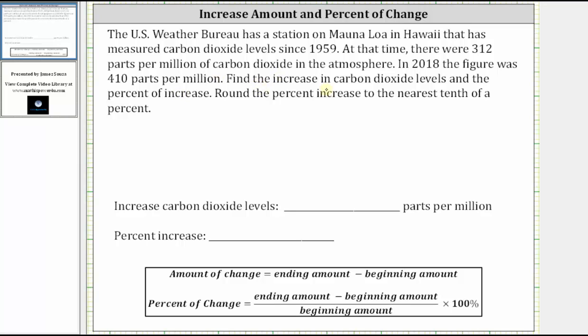We're asked to find the increase in carbon dioxide levels and the percent of increase. We're told to round the percent of increase to the nearest tenth of a percent.